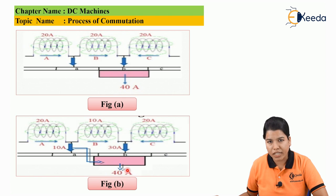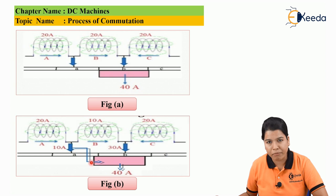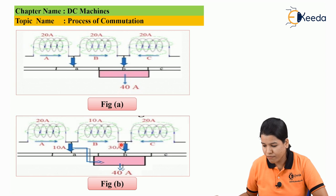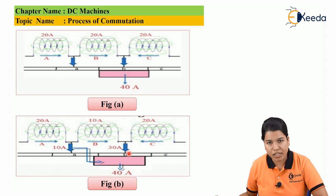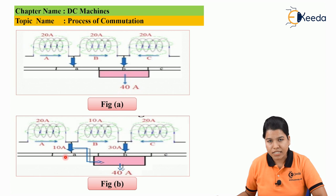In figure B, as the armature rotates, the brush has moved slightly from segment B to segment A. One-third of the brush has moved away from segment B into segment A. Hence, 10A flows from coil A through the brush, 10A from coil B, and 20A from coil C, so 30A flows from segment B. The current from segment A is 10A and from segment B is 30A, giving a total brush current of 40A.